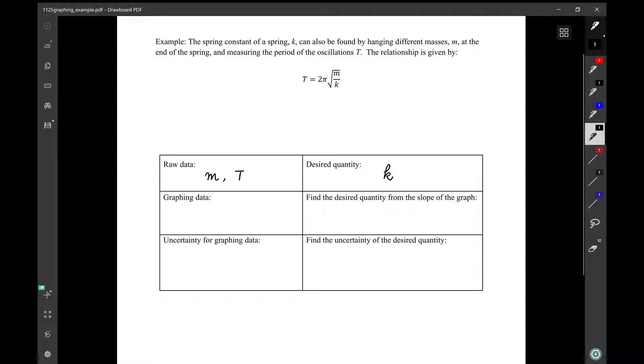So we are going to find this k by a graph. However, if you plot the raw data directly, if you plot the period on the y-axis and the mass on the x-axis, you will end up with a curve like this. And this is because the period is proportional to the square root of m, not proportional to m. So with the curve, we won't be able to get the slope and we won't be able to calculate the spring constant k.